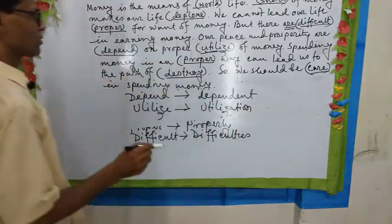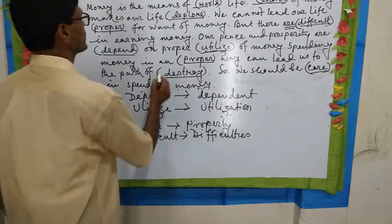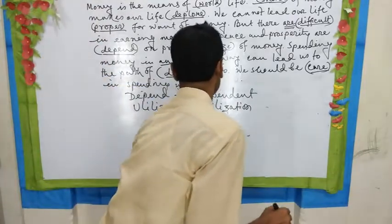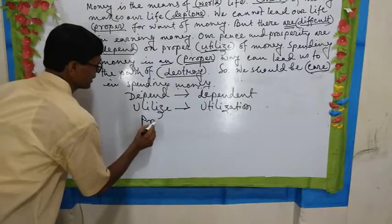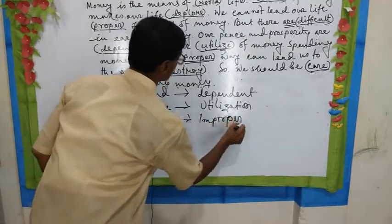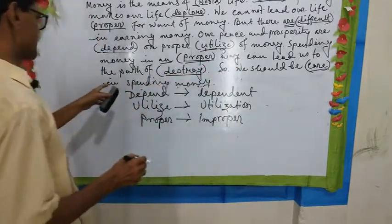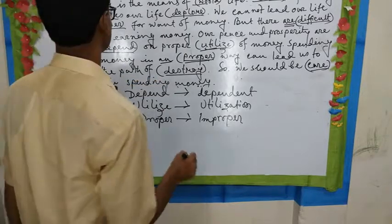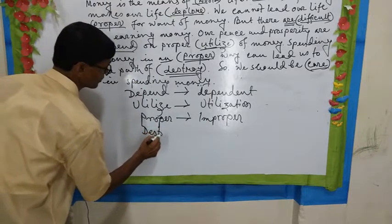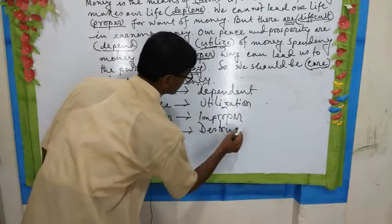Next, write down: spending money — the meaning is improper use. Since 'proper' appears here, what will its opposite be? If we change 'proper,' what will come? Improper. We can lead us to the path of destroy — now 'destroy,' what will it become? Destruction.